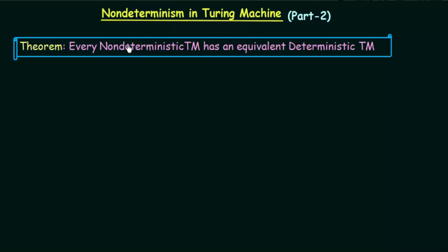Here we have a theorem which says every non-deterministic Turing machine has an equivalent deterministic Turing machine. If we are able to prove this theorem, then we can say that the power of non-deterministic as well as deterministic Turing machines are the same. By power I mean the class of languages that they are able to recognize or decide. The speed of computation may differ, but we are talking about their power of computation.